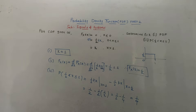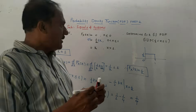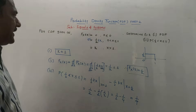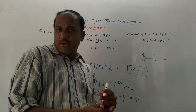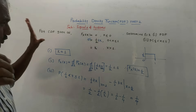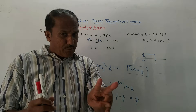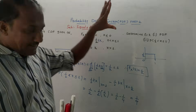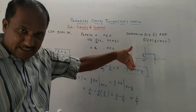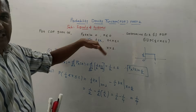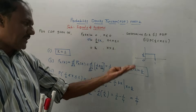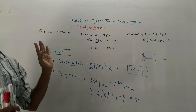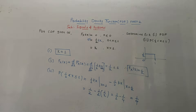So dear students, we have solved the numericals related to the given value of CDF and calculation of PDF. There are two types of numericals in PDF: Part 1 when the value of PDF is given, and this Part 2 in which CDF is given and you calculate the constant K, probabilities, and the PDF. That's it for today's session. Thank you, thanks a lot for watching.